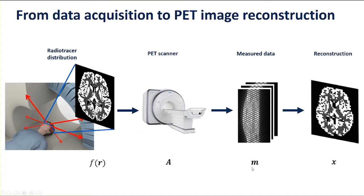This results in a measured data vector M — typically about a thousand sinograms, which are basically collections of projections around the head of the subject at various copolar as well as azimuthal angles. What we're doing in image reconstruction is seeking to represent that continuous radiotracer distribution F of R using a discrete approximation — a vector X — a list of numbers corresponding to the radioactive concentration in each pixel, ideally in three or four dimensions.